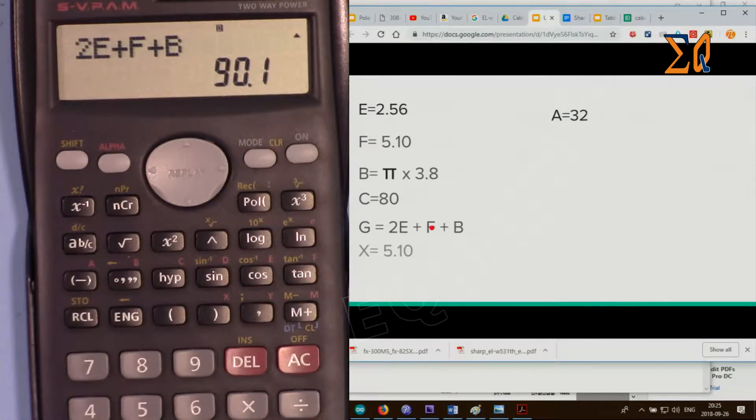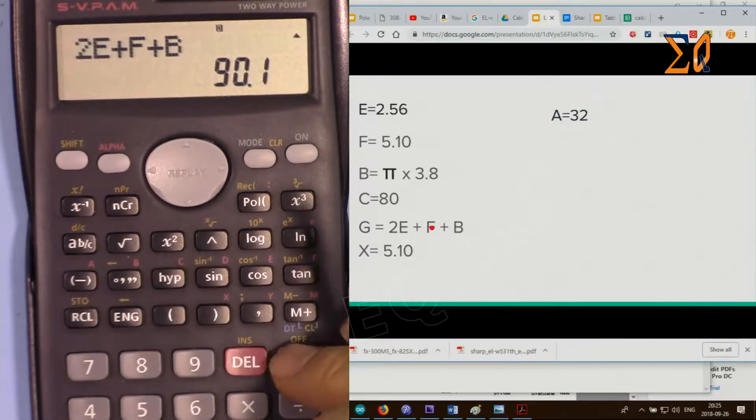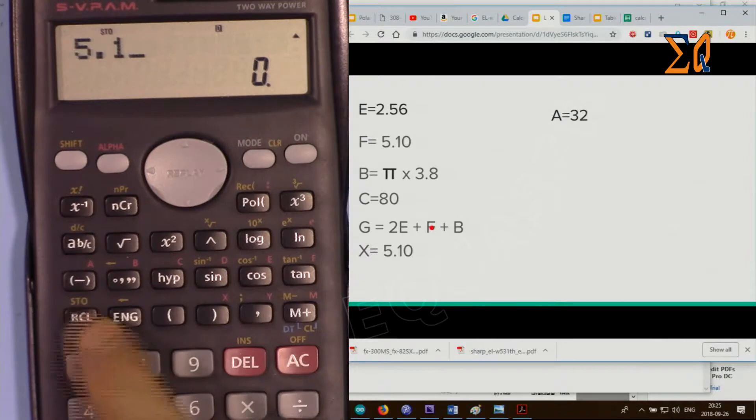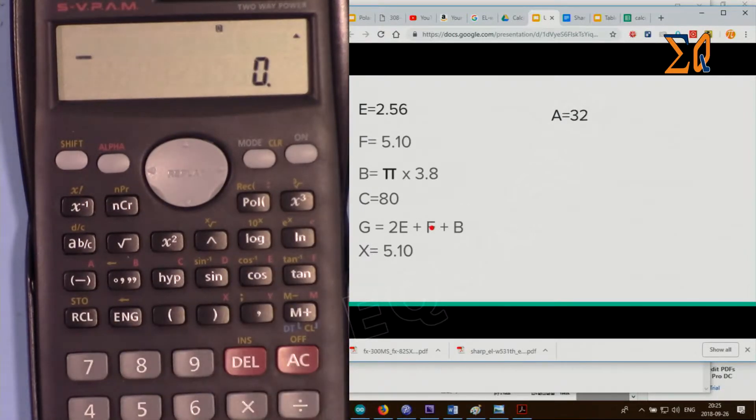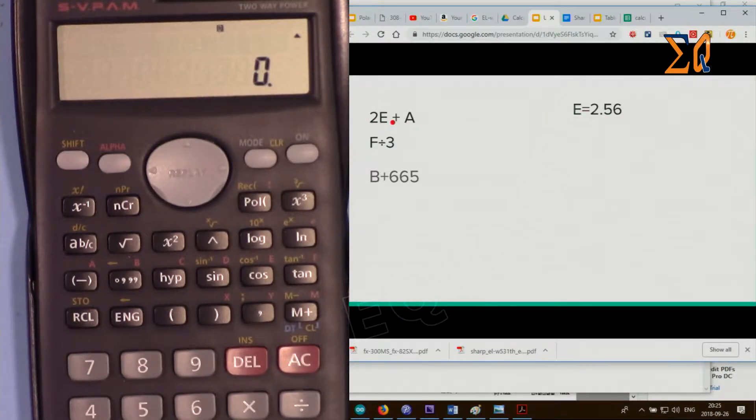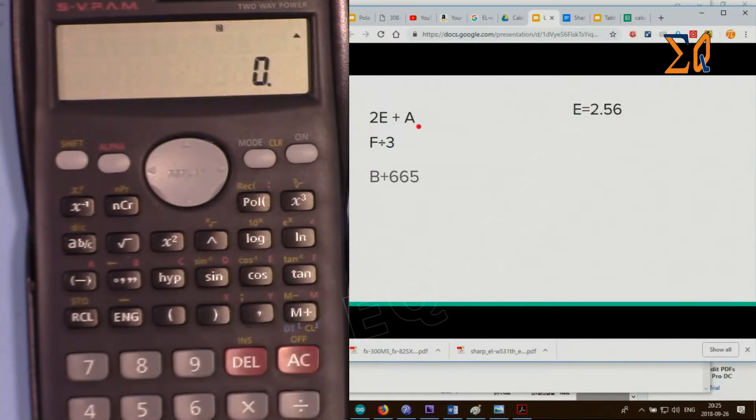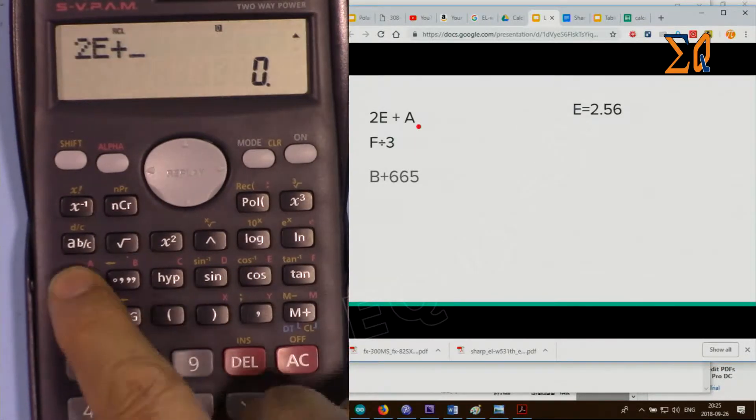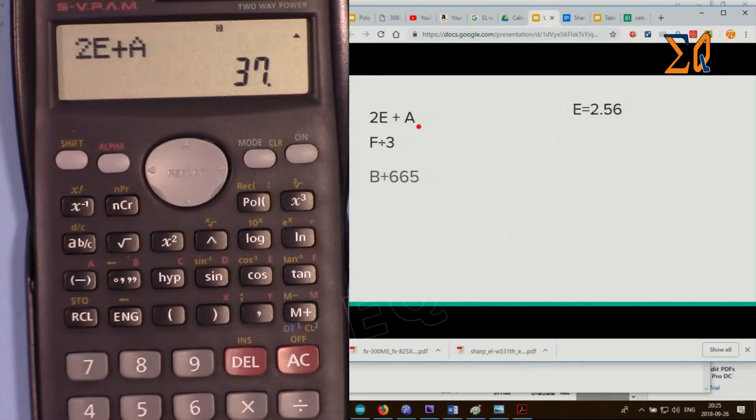Let's store 5.1, second function store into X, so that's already stored. We know that E was 2.56. Now let's do 2E plus A. Enter 2 recall E plus recall A, so that is the value of the calculation.